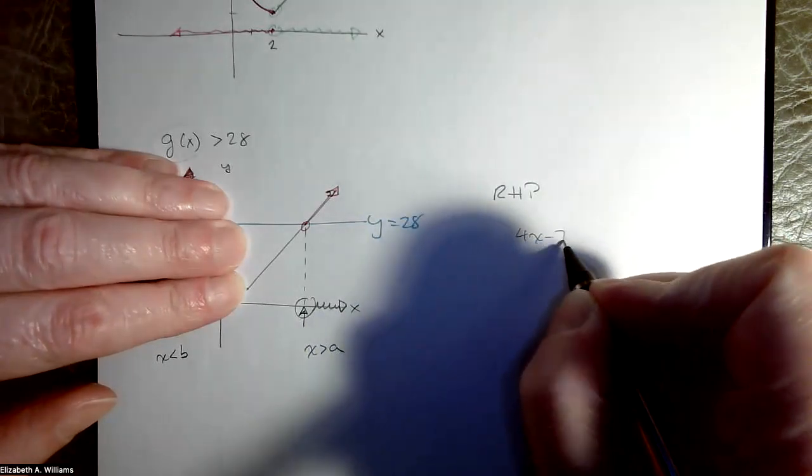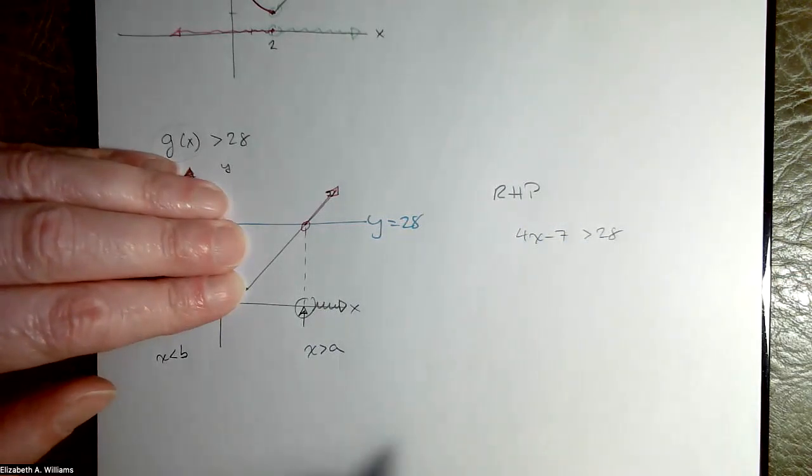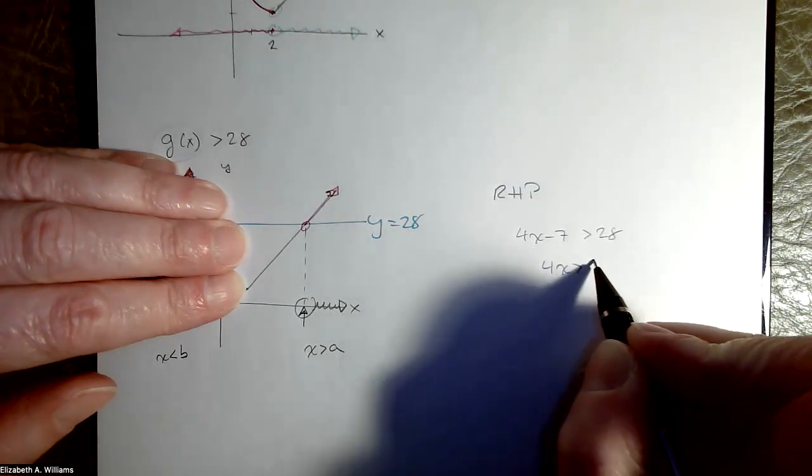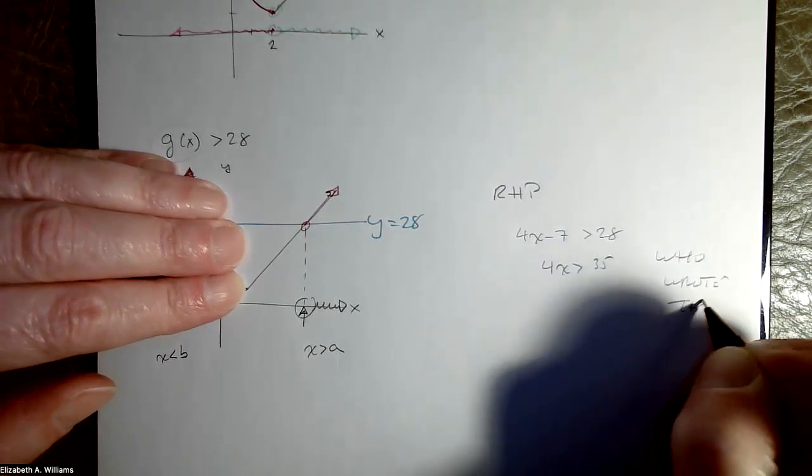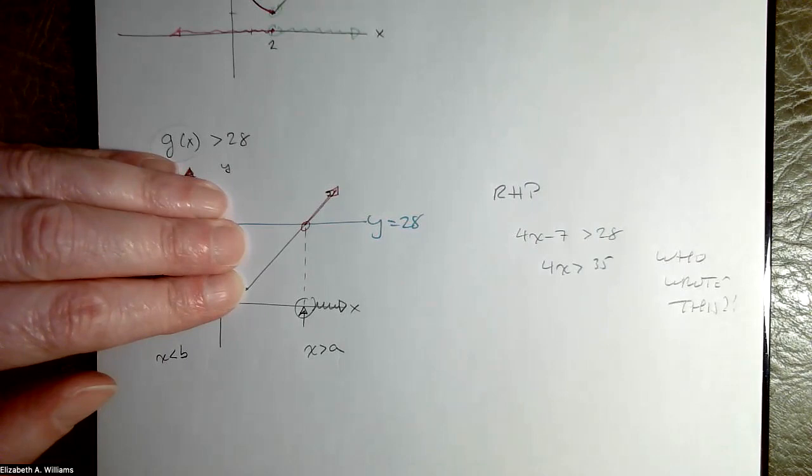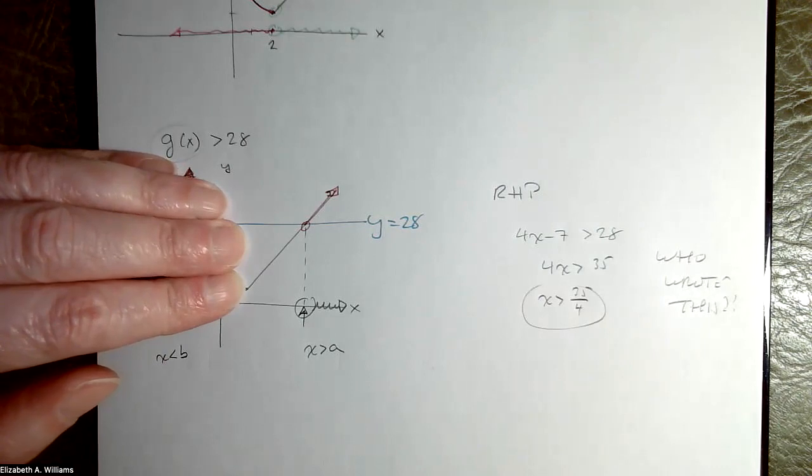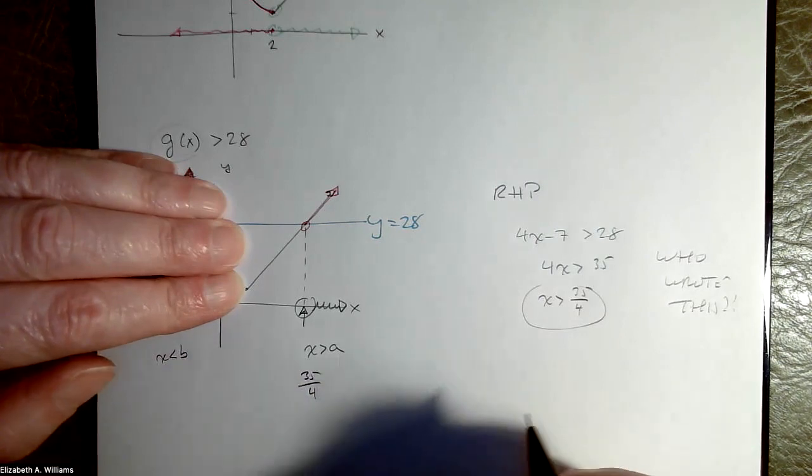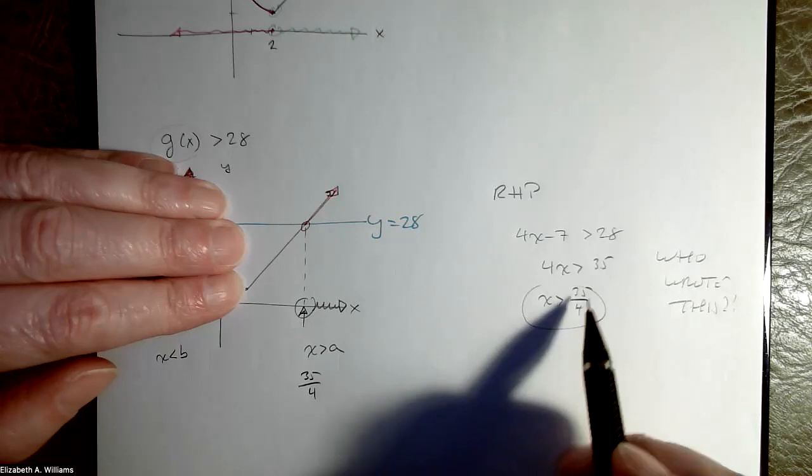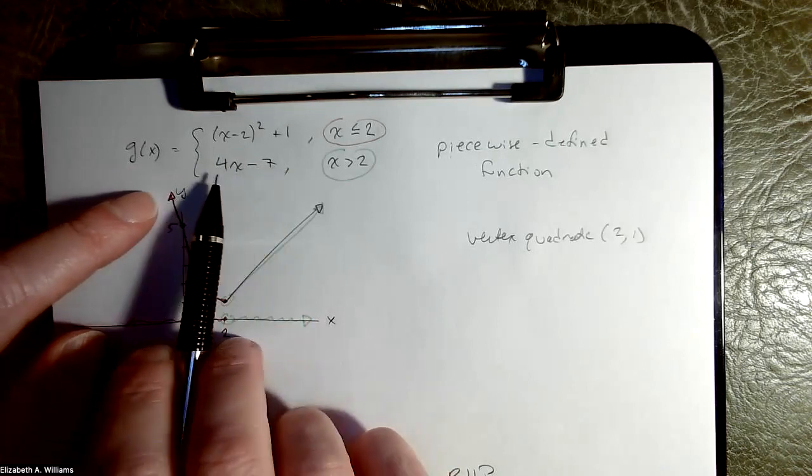Okay, and the rule for that is 4x minus 7. And I want to know where that is greater than 28. And that's a relatively friendly inequality except for the fact that we don't get a number that's divisible by 4. So who wrote this? I don't know who, somebody got paid to write this question. Let's not think about that. Relatively swift result. So right here, this is 35 fourths. So any x that happens to be bigger than 35 fourths will cause g of x to use this rule, and all the values will be bigger than 28. Hurrah, okay.